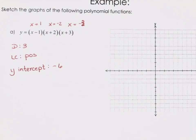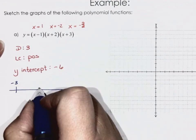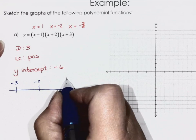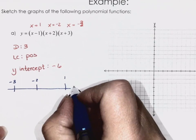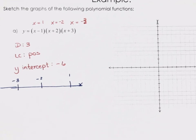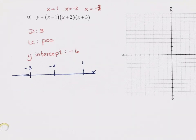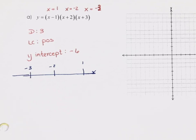Now we do sign analysis. I like to do it on a number line. Negative 3 is here, negative 2, and 1 — these are all my x-values. What I'm looking for is what's happening with my y-values. I want to pick a test point less than negative 3 — say negative 4. When x = −4, what's our y-value?